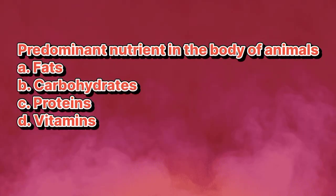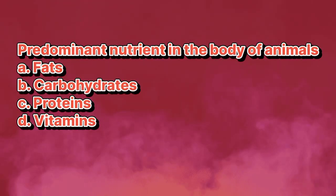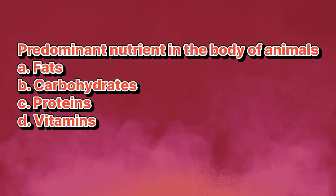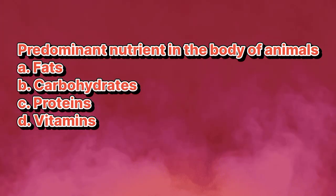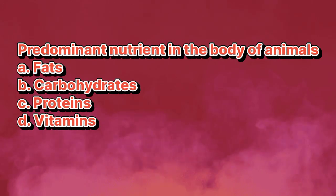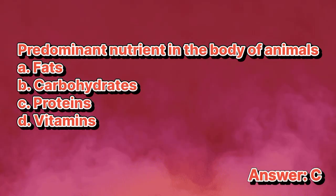Predominant nutrient in the body of animals: A. Fats. B. Carbohydrates. C. Proteins. D. Vitamins. The answer is letter C.